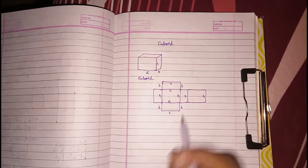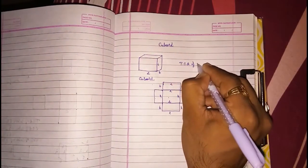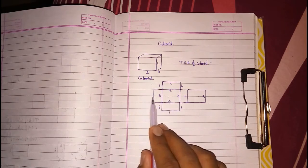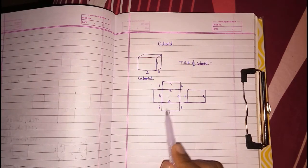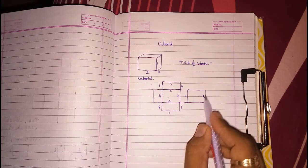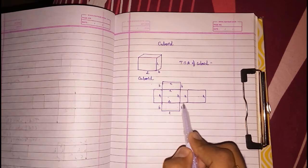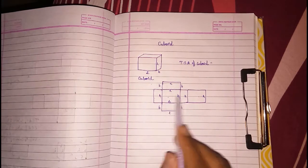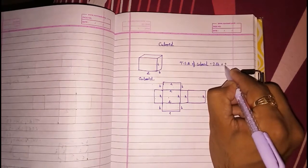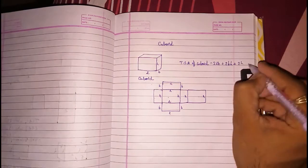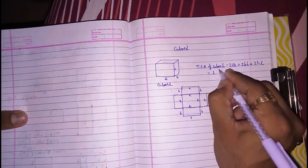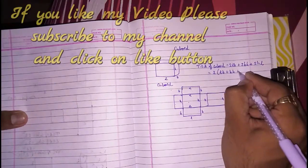To find the total surface area of a cuboid, we find the area of each rectangle and add them. We get: length into breadth two times, plus length into height two times, plus breadth into height two times. That gives us 2(LB) + 2(BH) + 2(HL). Taking 2 as common, the total surface area of a cuboid is 2(LB + BH + HL).